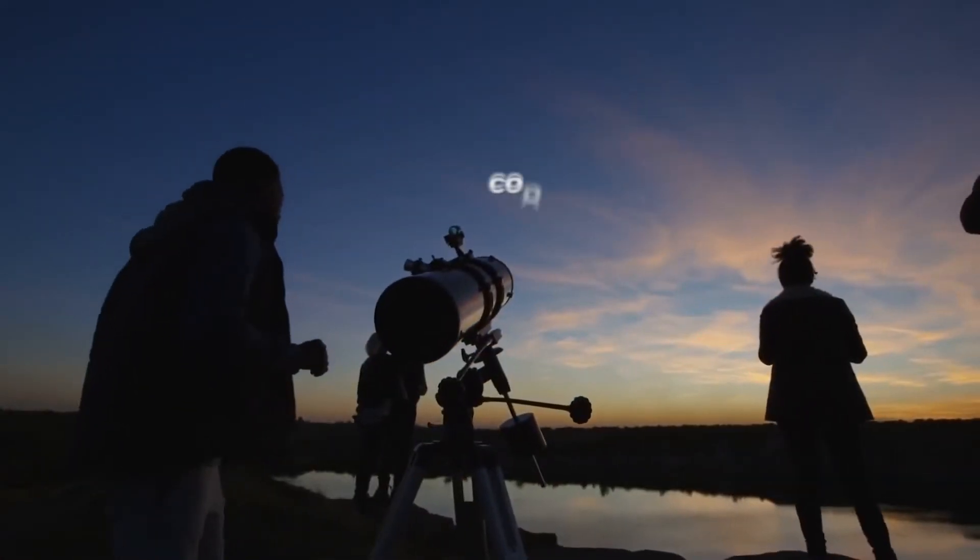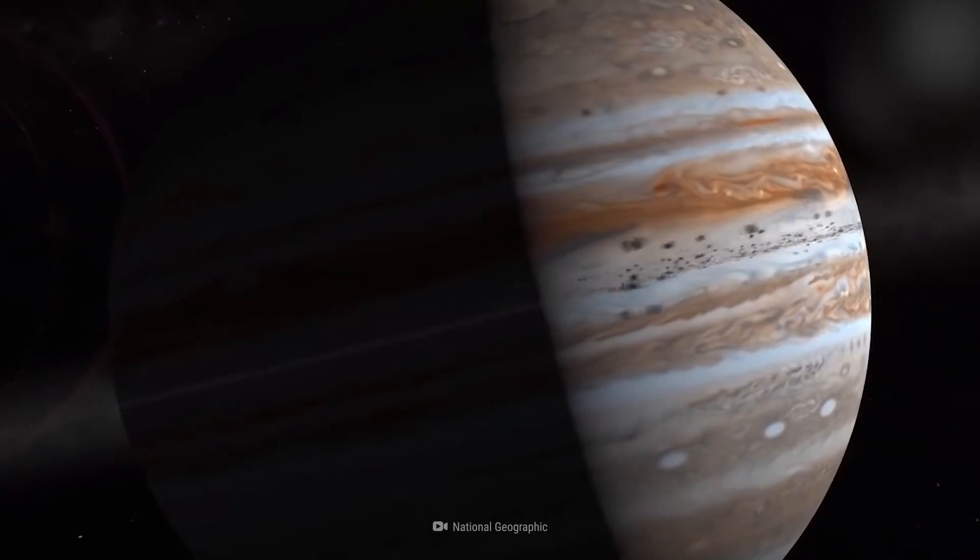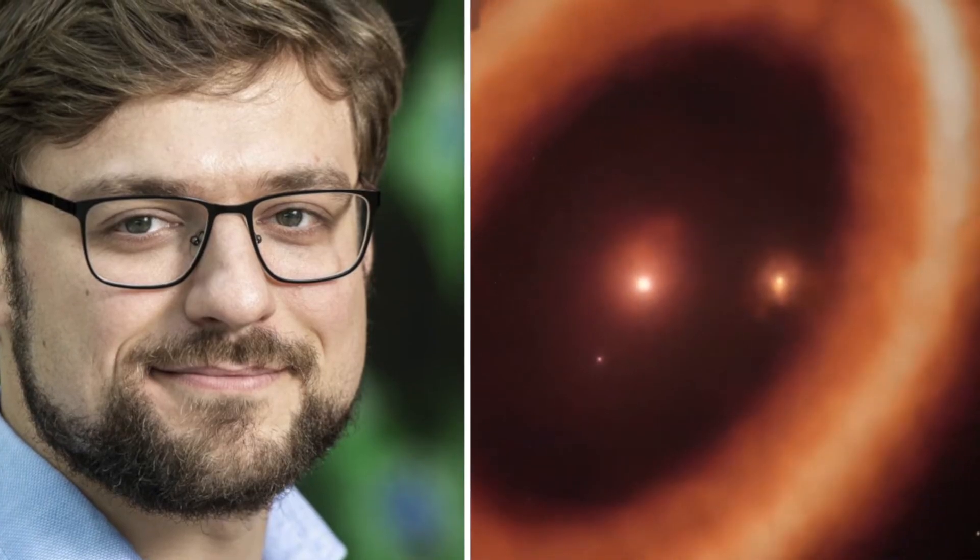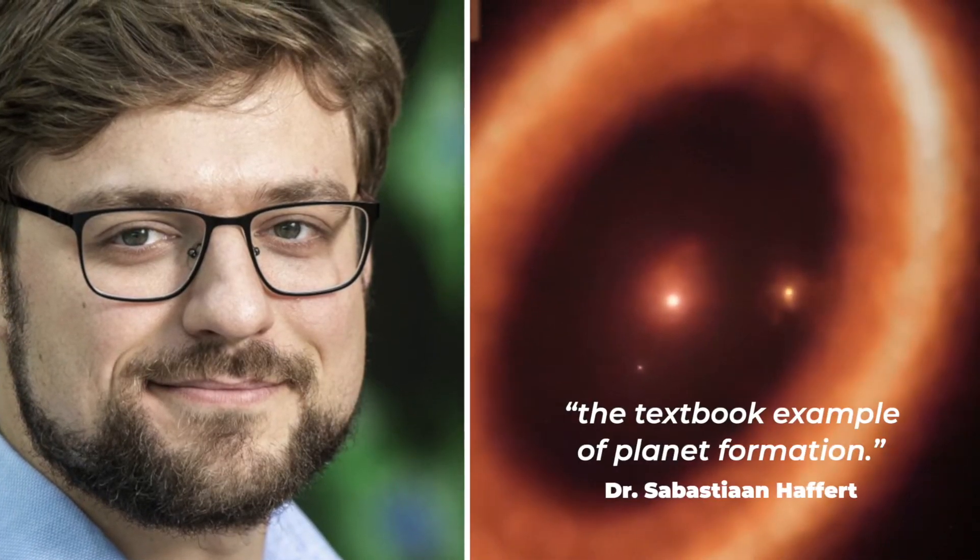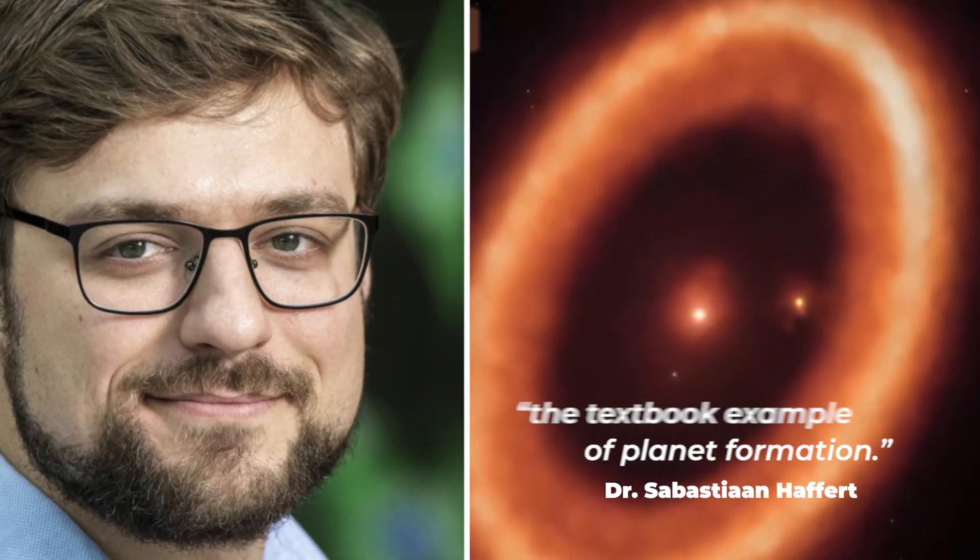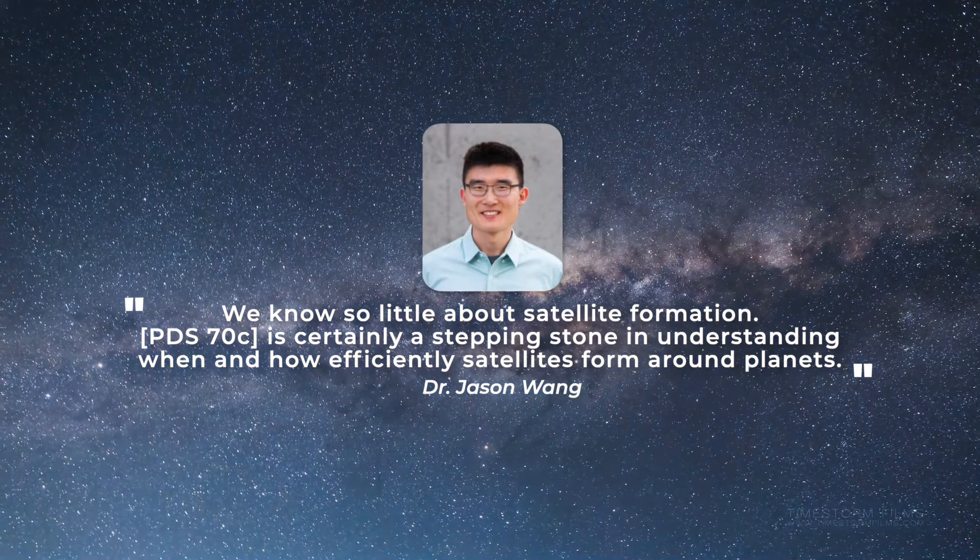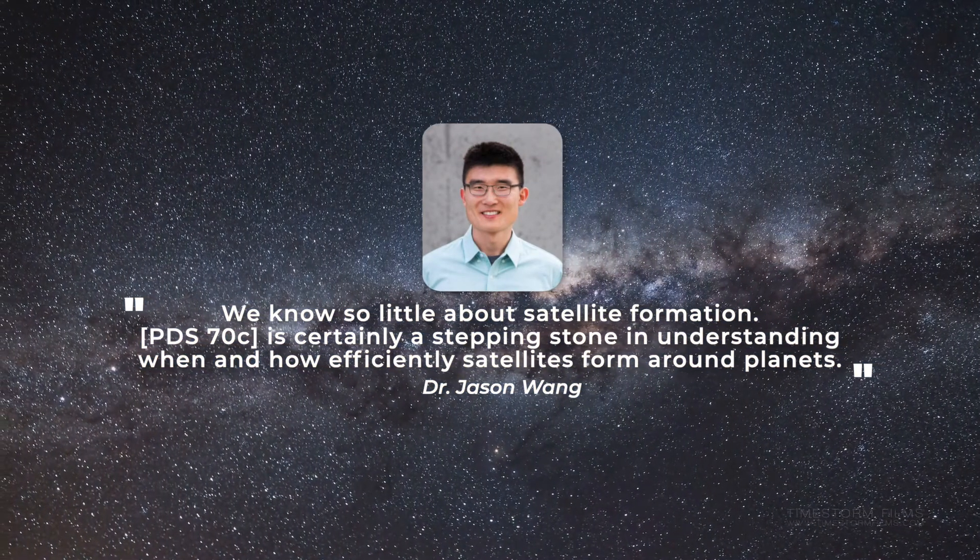For the very first time, we have concrete evidence to support this theory. The PDS 70 system has been described by Dr. Sebastian Haffert of the University of Arizona as the textbook example of planet formation. Dr. James Wang of Caltech said, "We know so little about satellite formation. PDS 70c is certainly a stepping stone in understanding when and how efficiently satellites form around planets."